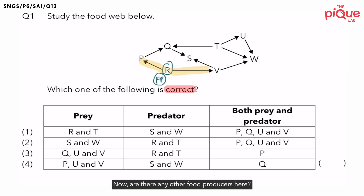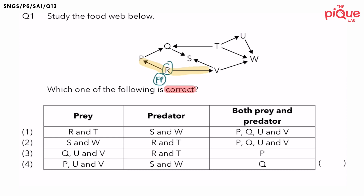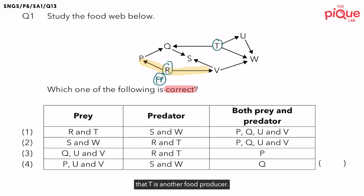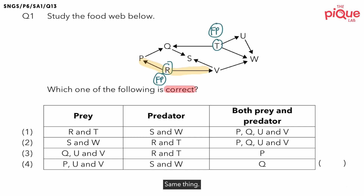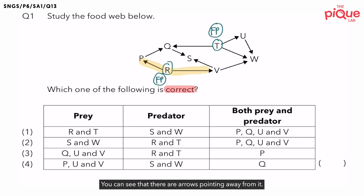Now, are there any other food producers here? If you look carefully, you'll notice that T is another food producer. You can see that there are arrows pointing away from it as well.